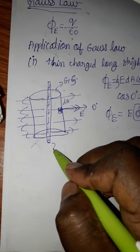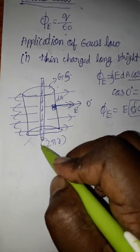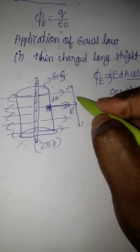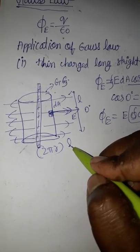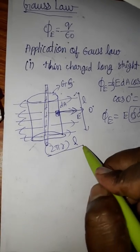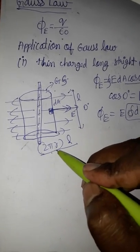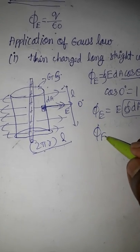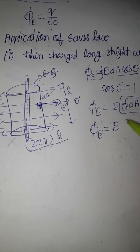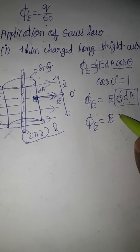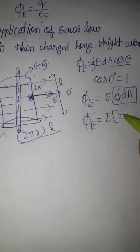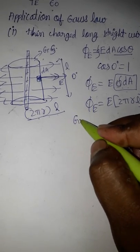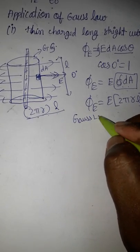The closed surface integral of dA equals the total surface area of the cylindrical Gaussian surface. The circumference is 2πr and the height is l (the length of the cylinder), so the total surface area is 2πrl. Therefore, the total electric flux equals E times 2πrl.